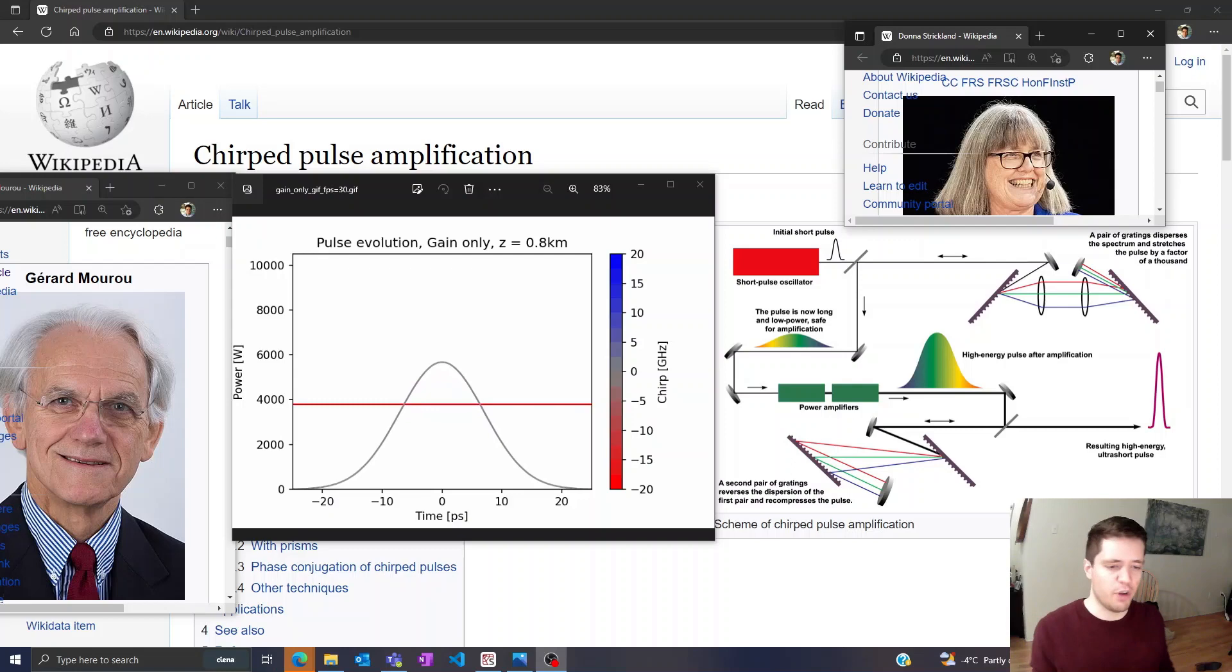However, there is a fundamental limitation to what kind of peak powers you can achieve with this process, because any gain medium inside an amplifier will have a damage threshold, here indicated with a horizontal red line. And if the power of the pulse exceeds this threshold, the medium itself will actually get damaged, it can get burned.